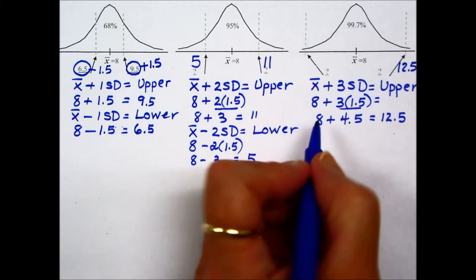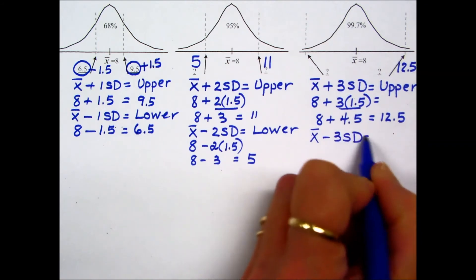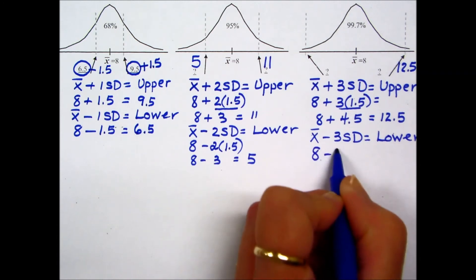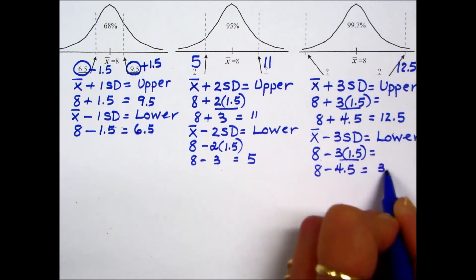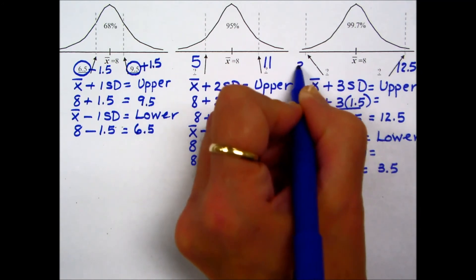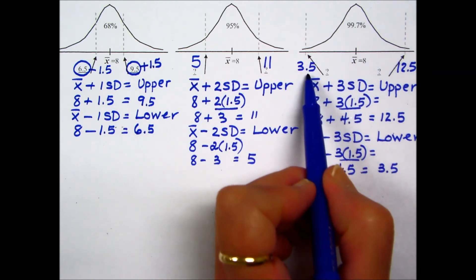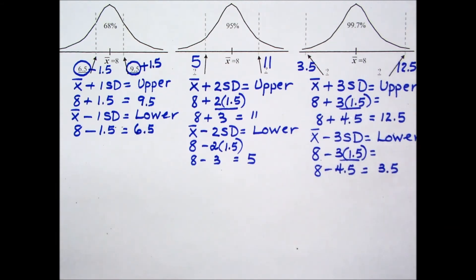And the formula for the lower boundary is the mean minus 3 times the standard deviation. Mean of 8 minus 3 times the standard deviation of 1.5. Multiply before we subtract and with subtraction we end up with 3.5. 99.7% of the data is going to fall between a low of 3.5 and a high value of 12.5. That's virtually all of the data should be found in this interval.